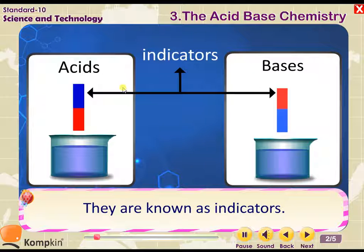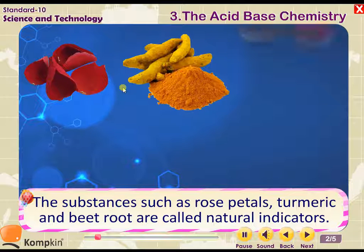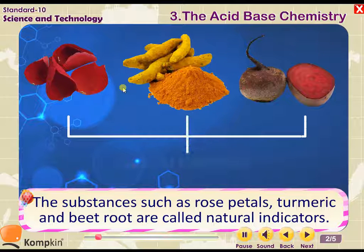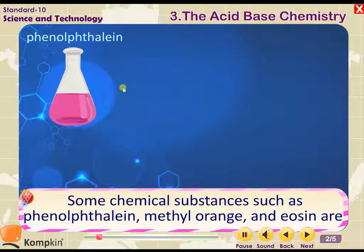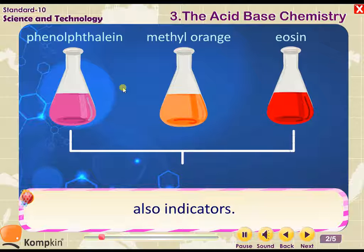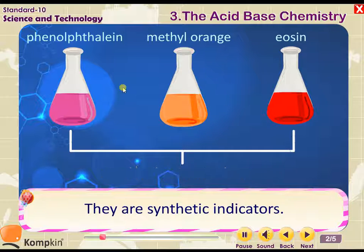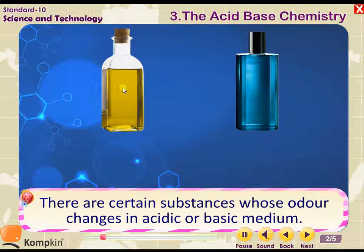Substances such as rose petals, turmeric, and beetroot are called natural indicators. Some chemical substances such as phenolphthalein, methyl orange, and eosine are also indicators — they are synthetic indicators.